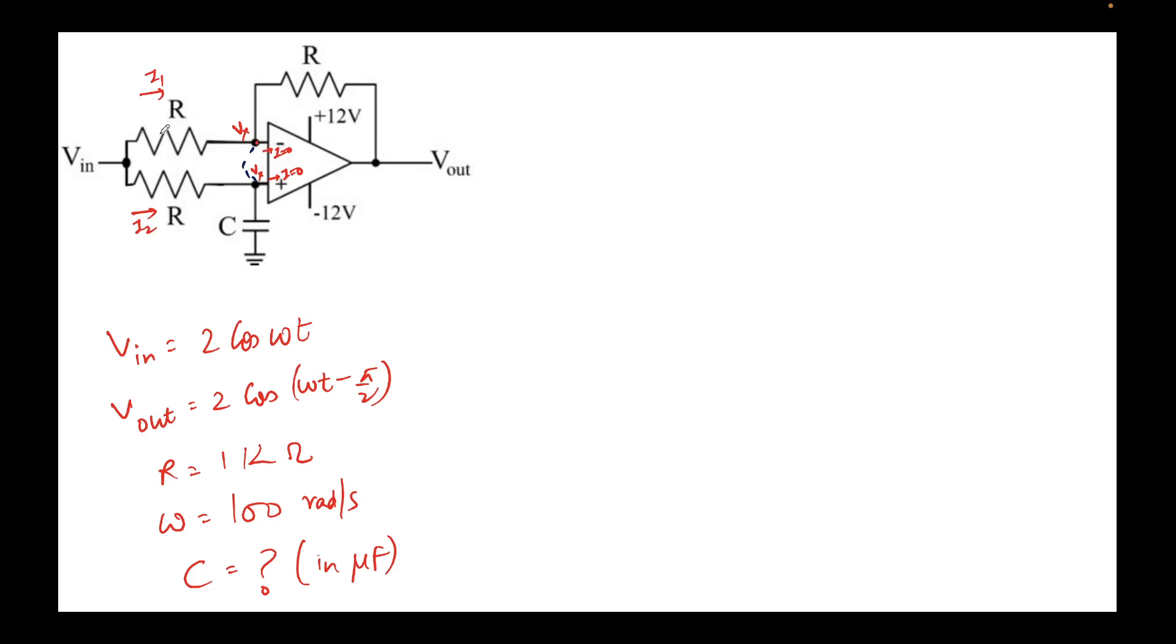Since no current is going to flow into the op-amp, all the current that is flowing through this resistor has to flow through this resistor in order to respect Kirchhoff's current law, I_1. Similarly, all the current that is flowing through this resistor, since none can go into the op-amp, has to flow through this capacitor, I_2.